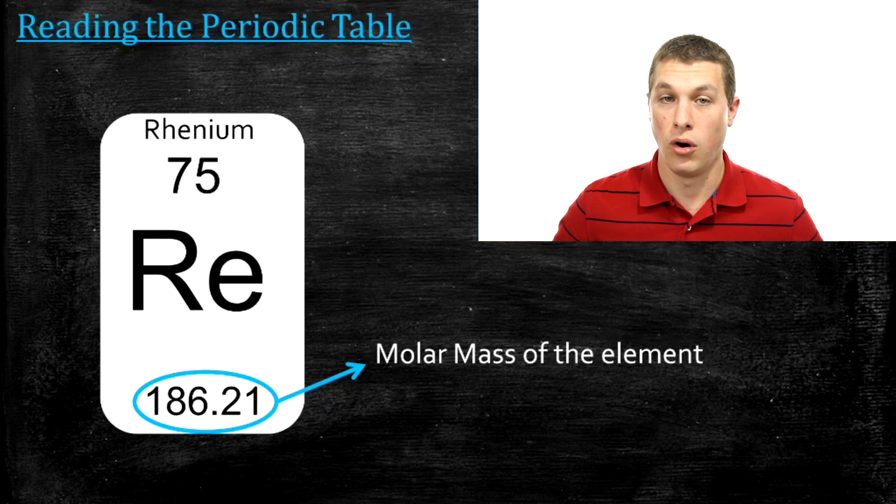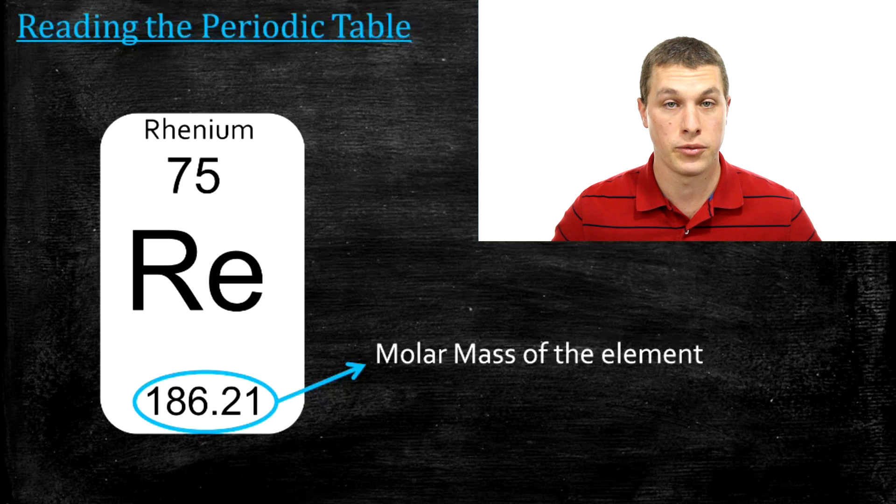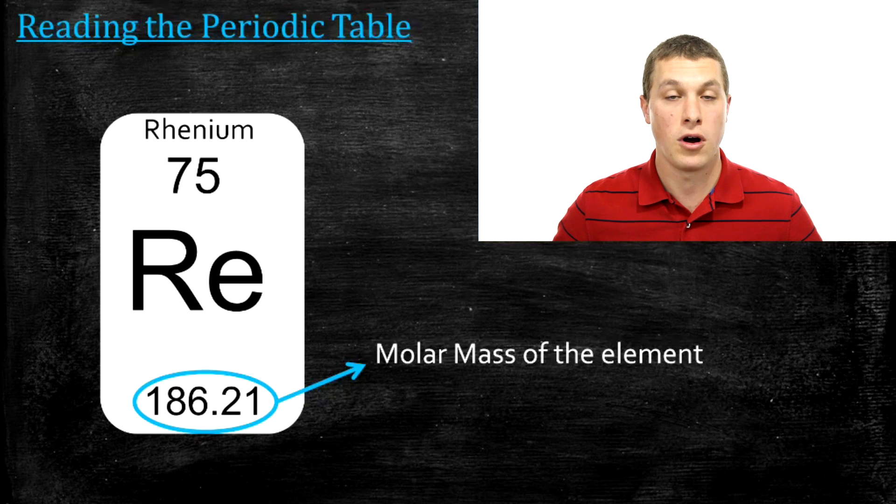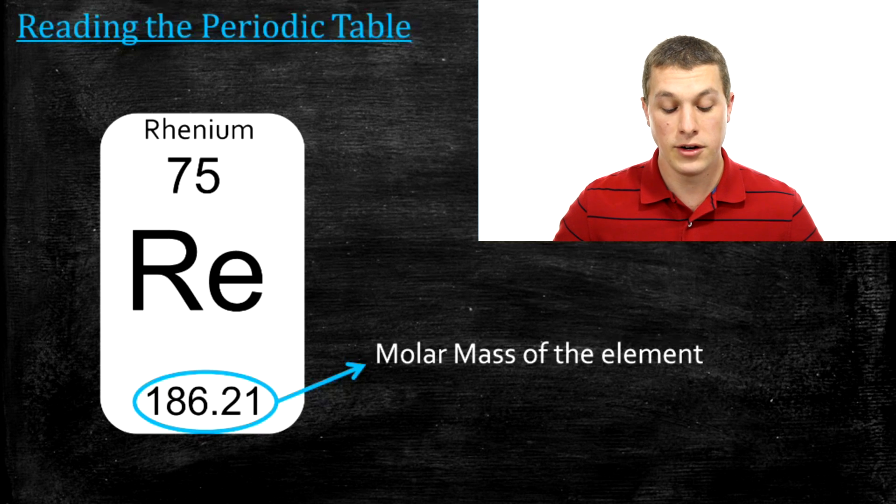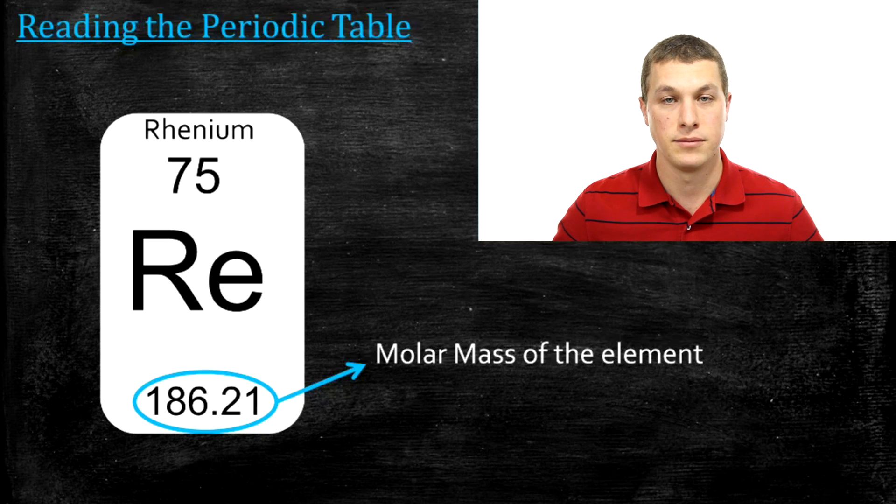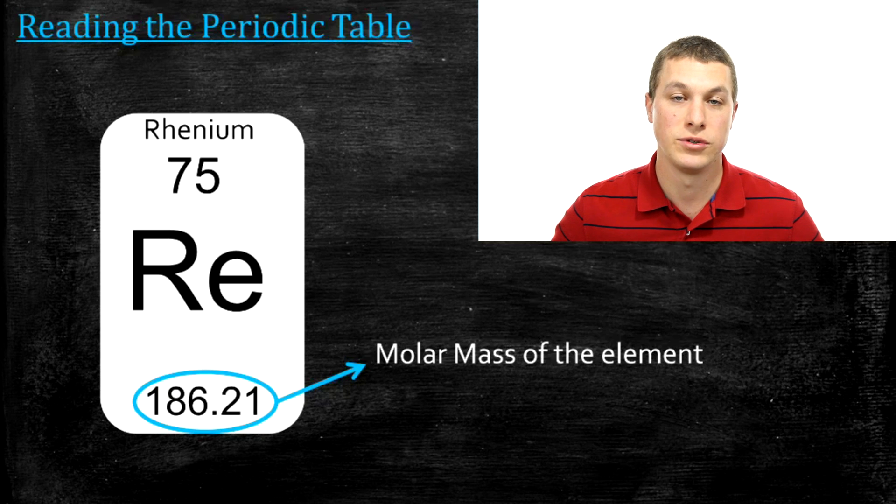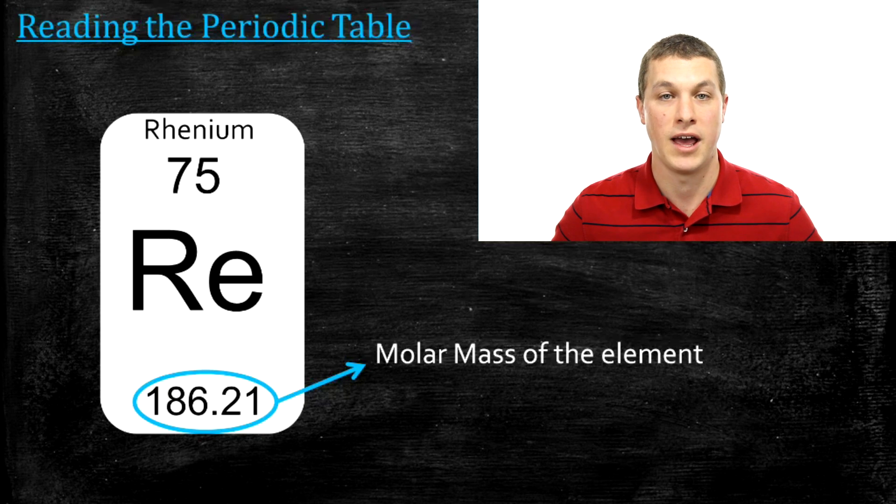You can think of it kind of like the weight of an element if there's a ton of elements nearby. How many? Well, a mole. A mole is a number, just like a dozen or one or two or three. But a mole happens to be a really large number. In scientific notation, it's 6.02 times 10 to the 23rd. And so that 186 down there that we call the molar mass, that's how many grams a mole of rhenium weighs. Let me say that again. That's the mass in grams for 6.02 times 10 to the 23rd rhenium atoms.